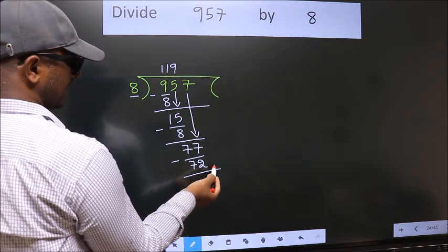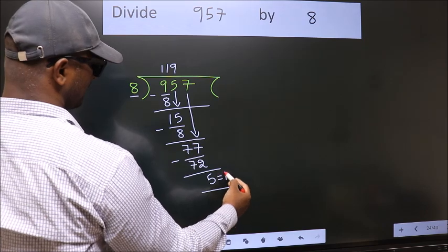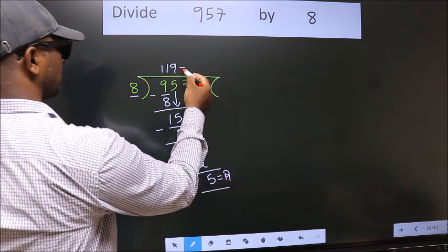No more numbers to bring down. So we stop here. This is our remainder. This is our quotient.